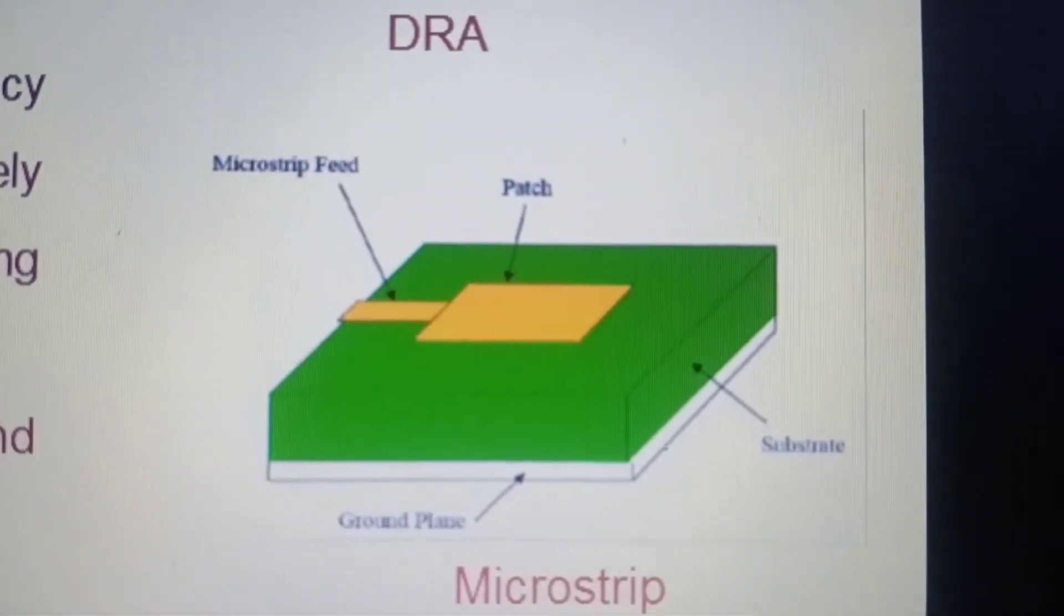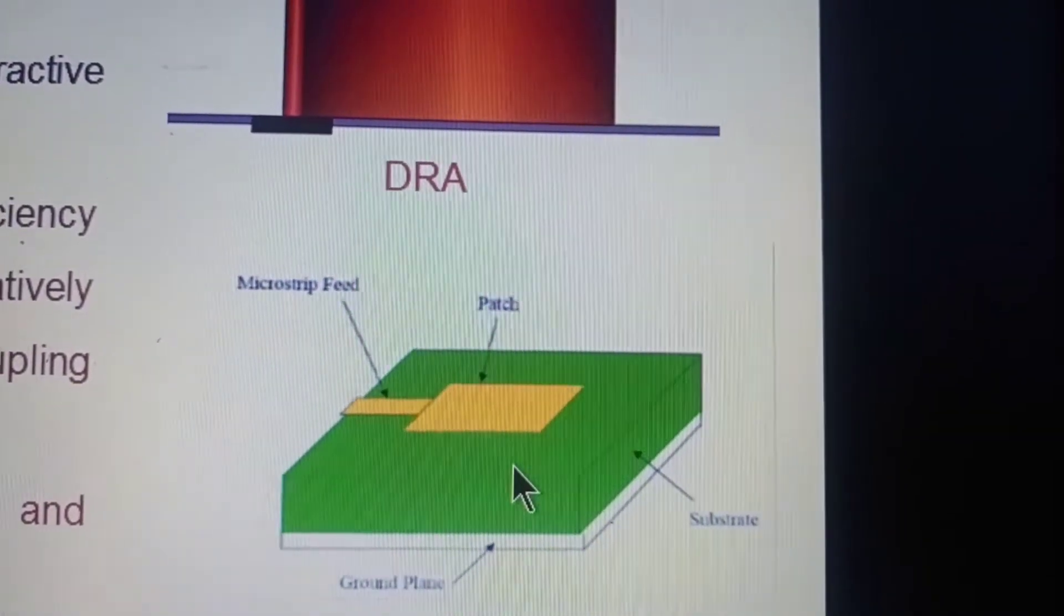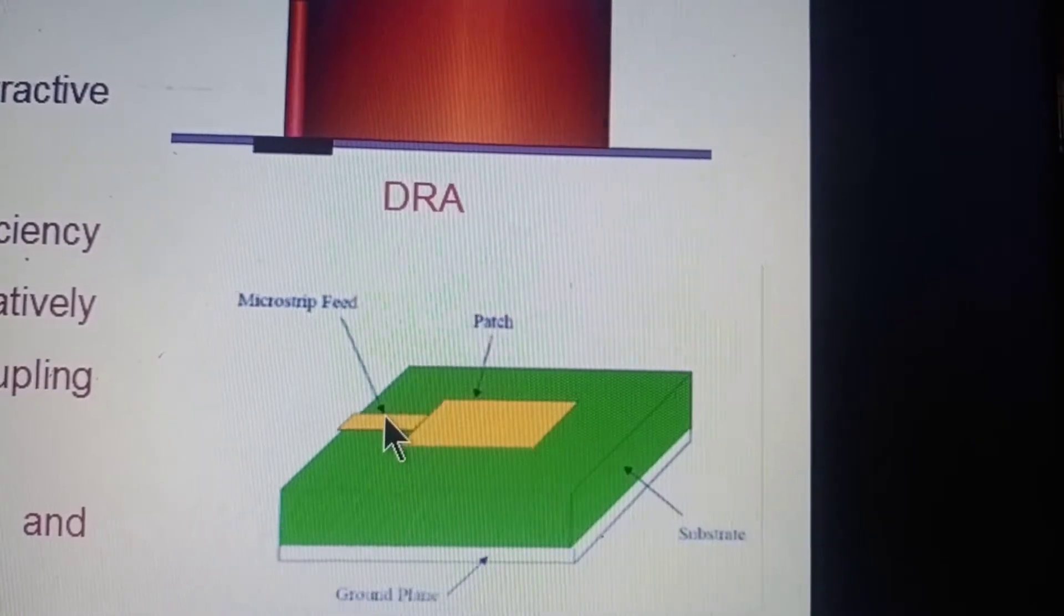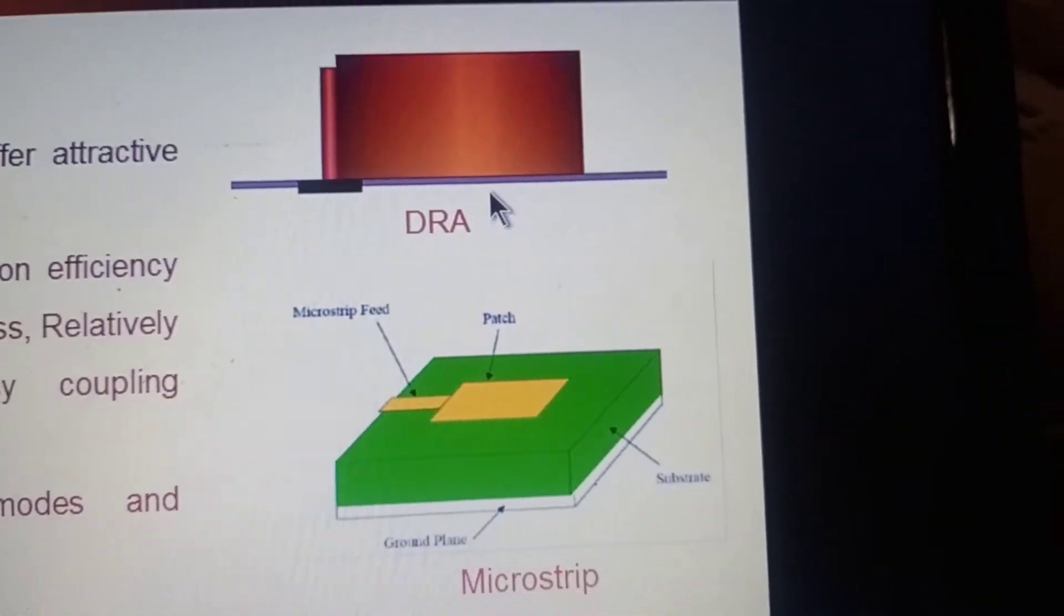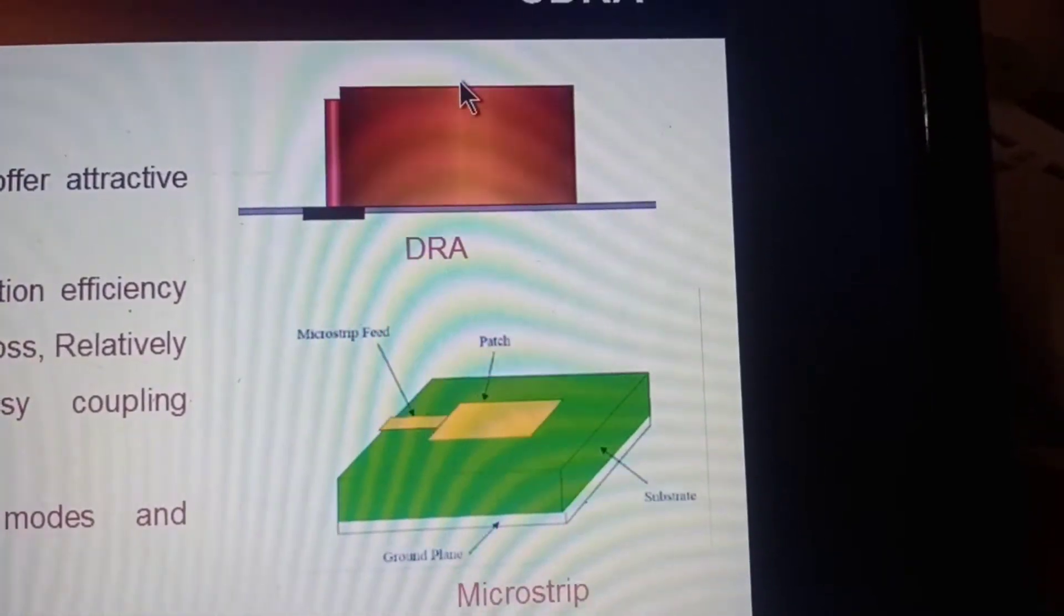If you compare with the microstrip patch antenna, here there is a ground plane, metal substrate, and also patch with feed that is also metal. But here you can find only ground plane is the metal, no any other metal at the top surface.